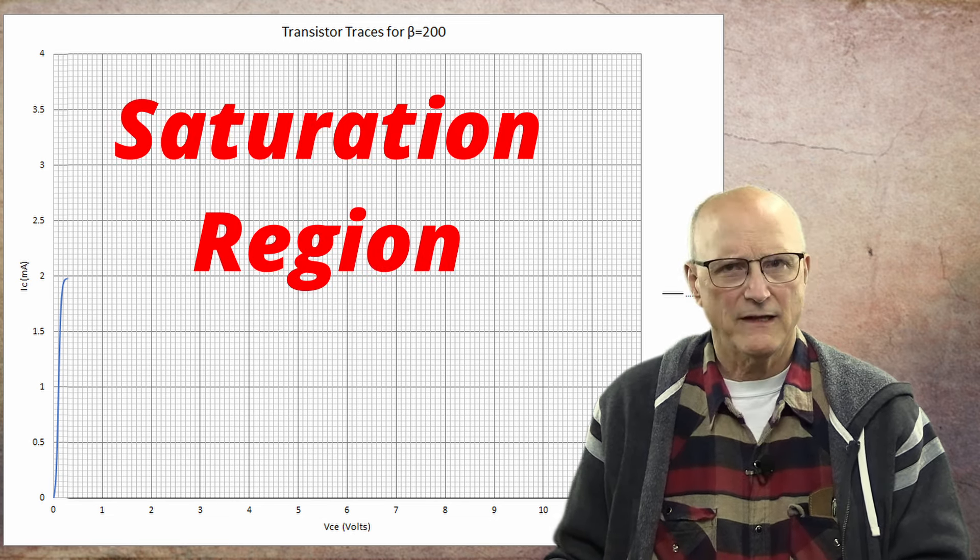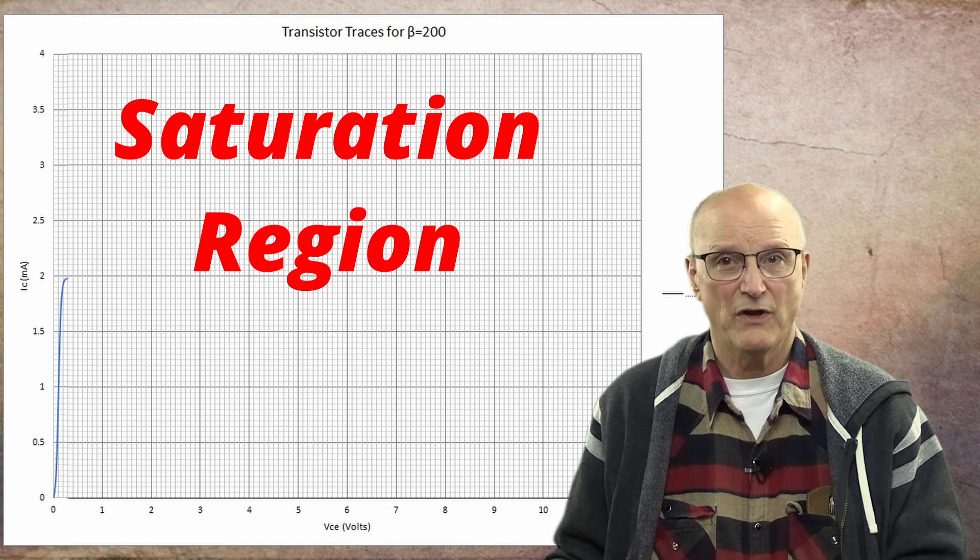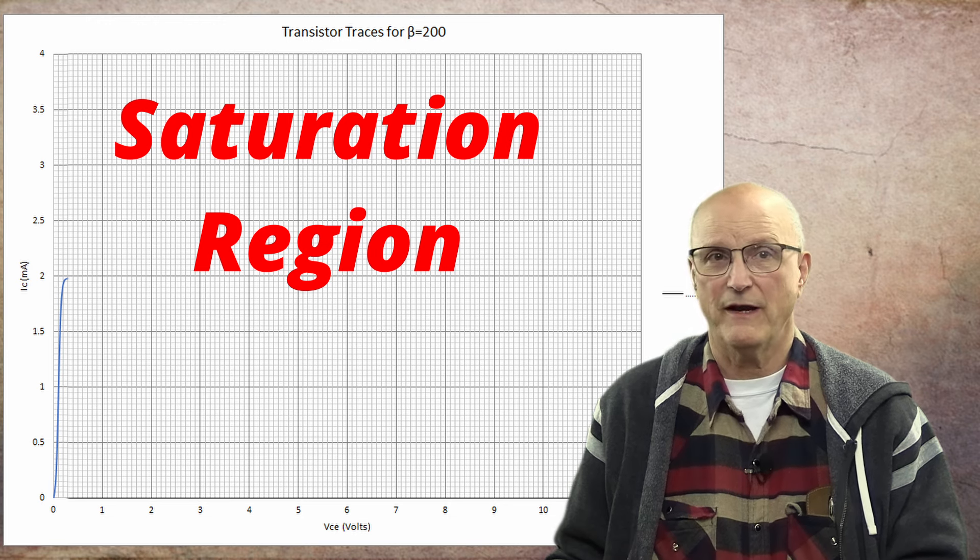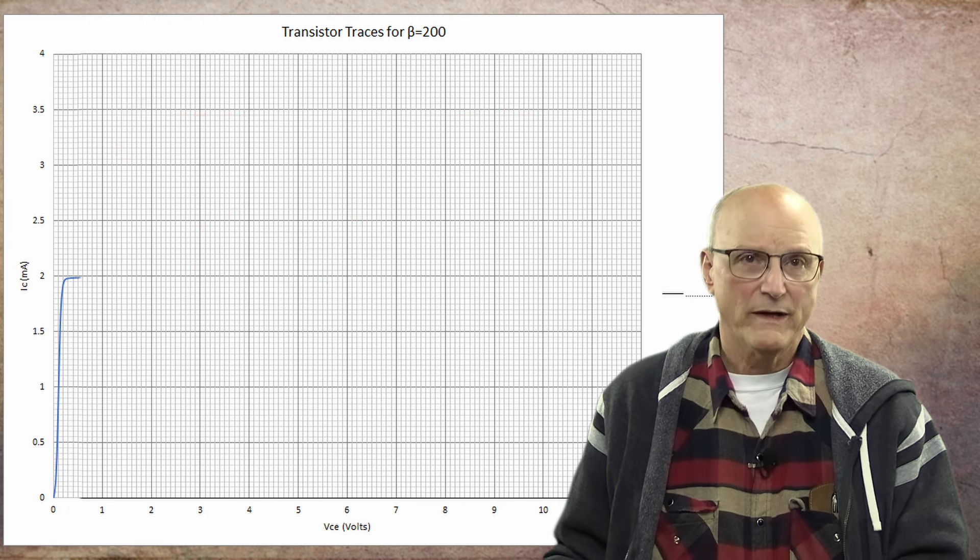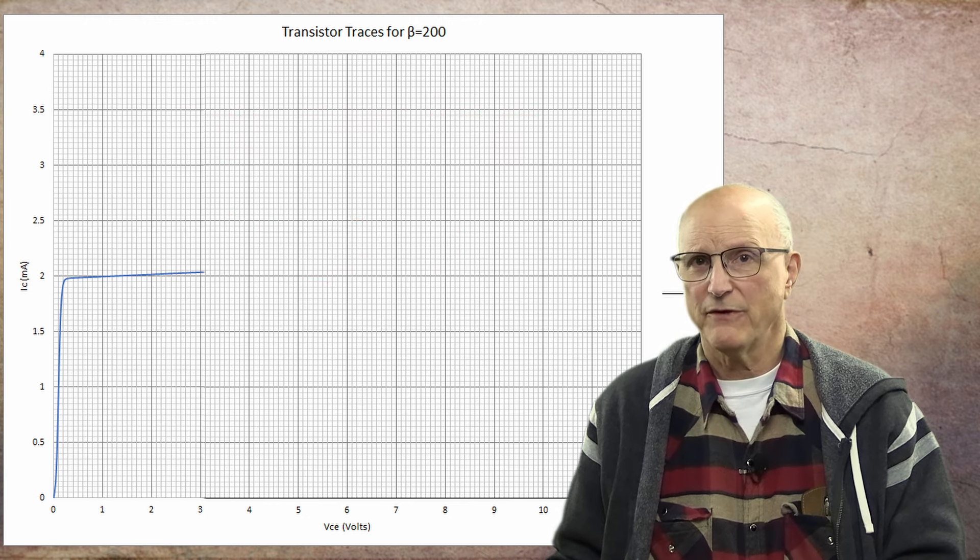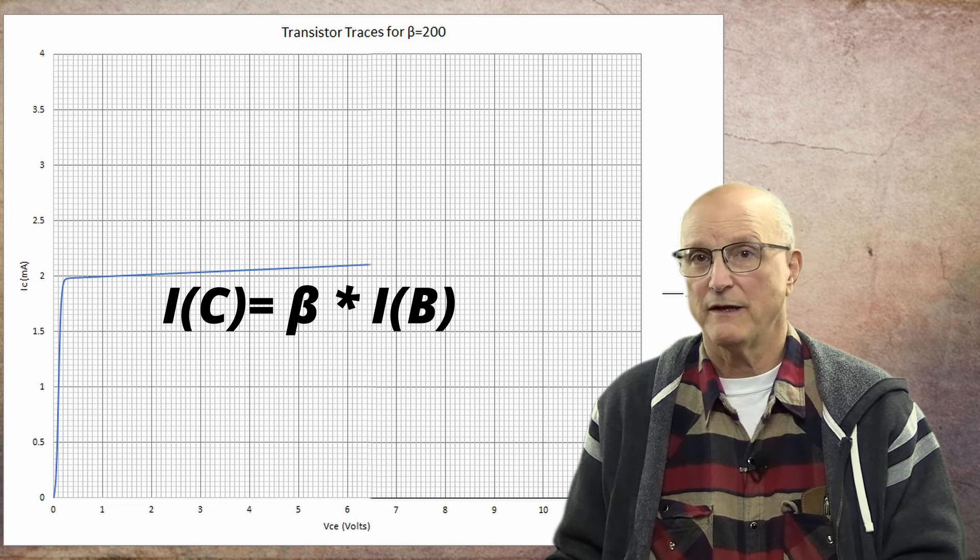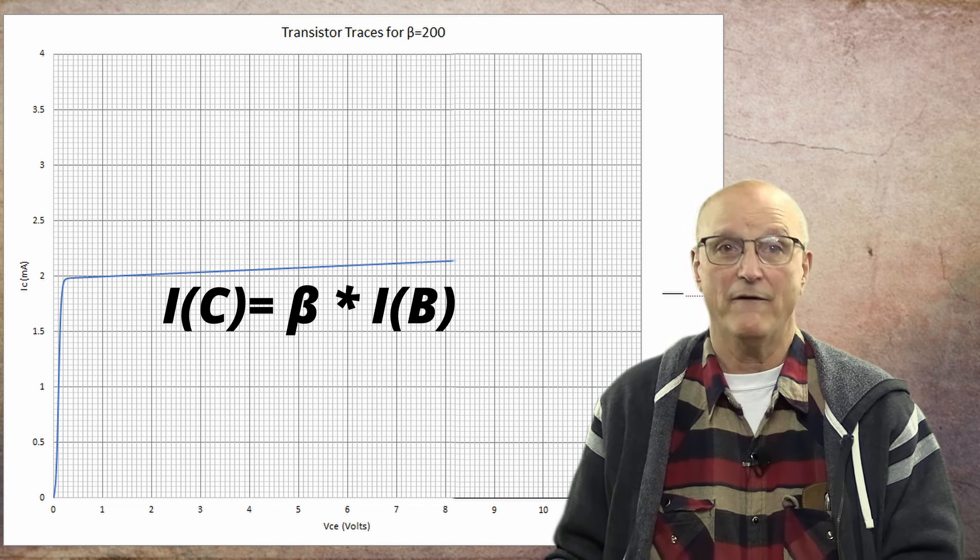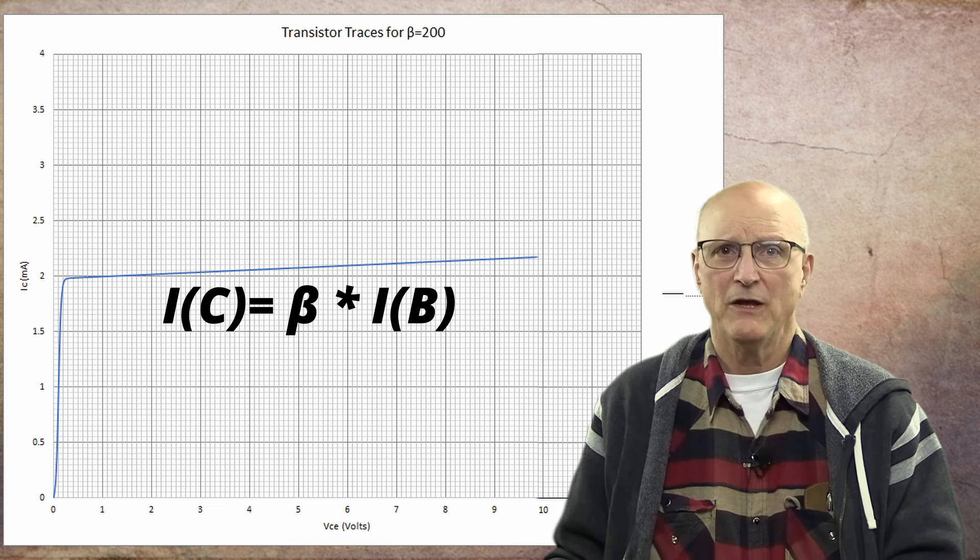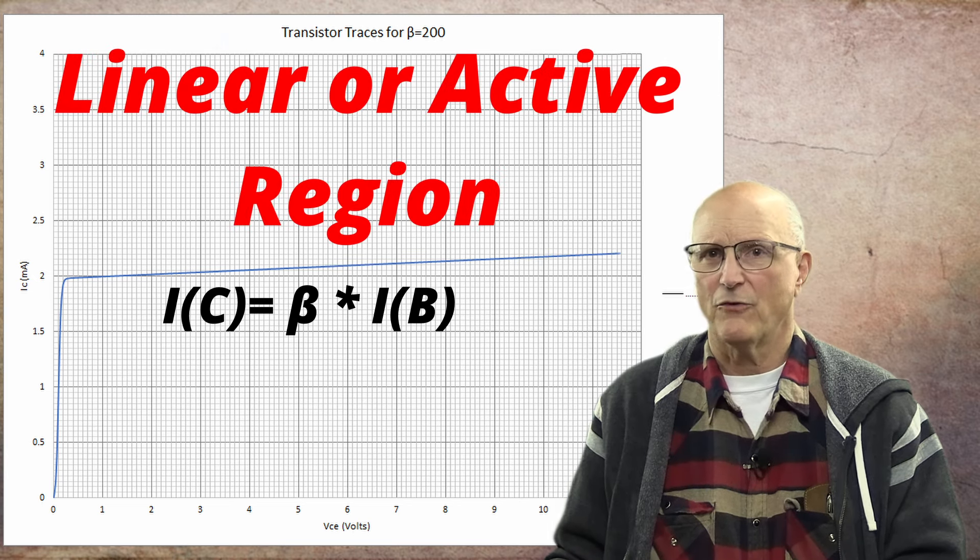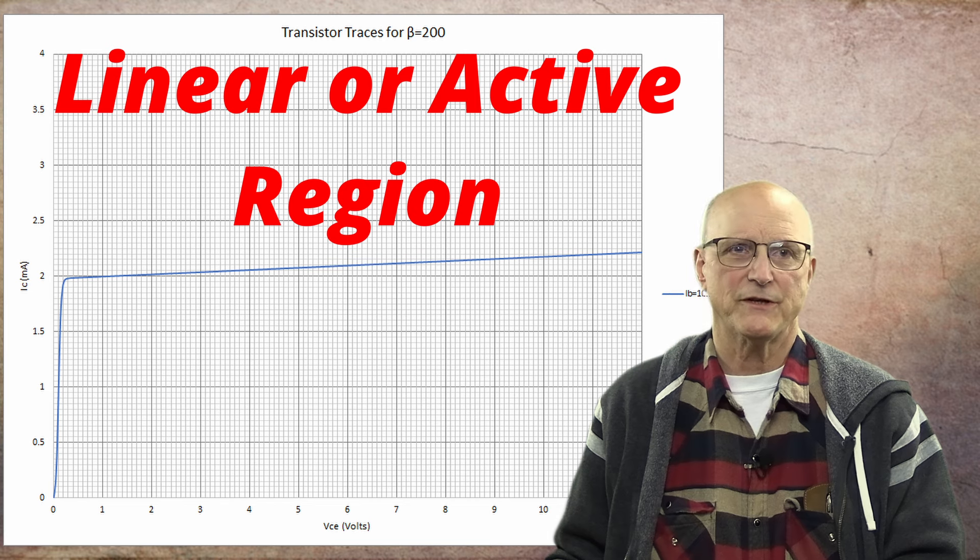This is referred to as the saturation region. It is a non-linear region, and we do not want to operate here for amplifiers. Once the base collector junction is completely reverse biased, the formula IC equals beta times IB now officially applies. We have entered the linear or active region of operation.